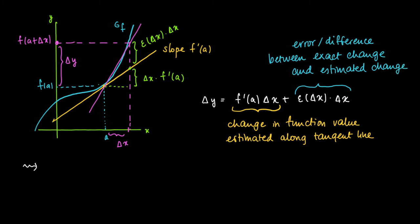Notice that when we divide delta y by delta x on the left-hand side, and we divide by delta x on the right-hand side, then we see that delta y divided by delta x equals the derivative in a, derivative of f in a, plus this function epsilon in delta x.